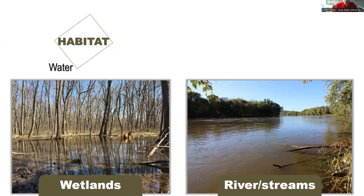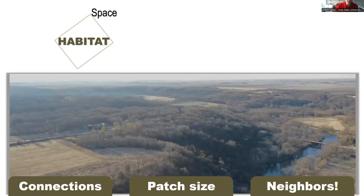Water is an important component of wildlife habitat — for drinking it can be limiting for some species, and for reproduction it's really important for some reptiles and all amphibian species. We can find water in forested environments from wetland ecosystems, and rivers and streams where our forests often tend to occur in our modified Midwestern landscapes. Finally, the space component: some species have patch size limitations or can't move through non-forested landscapes, so connectivity of our forests really matters. When managing for wildlife you may need to think about what the neighbors are doing and how your forest exists in a matrix of other forests and ecosystems.